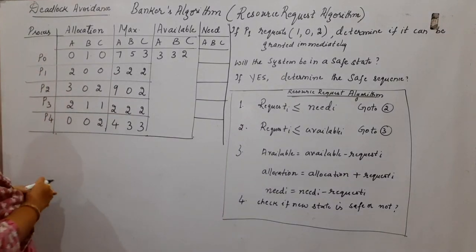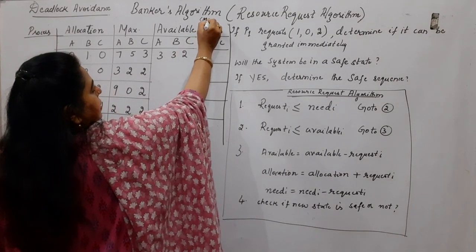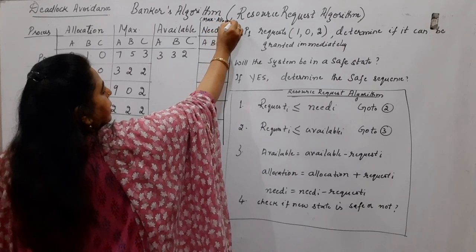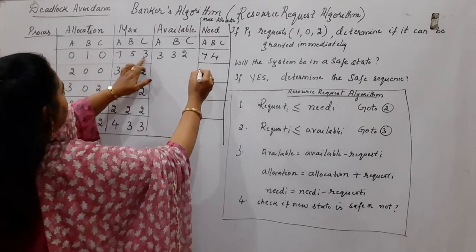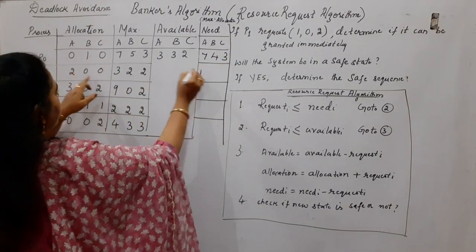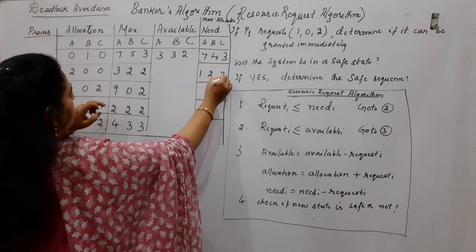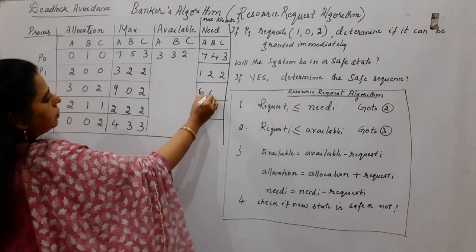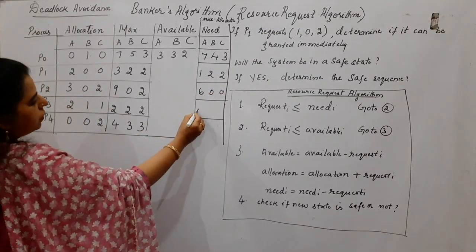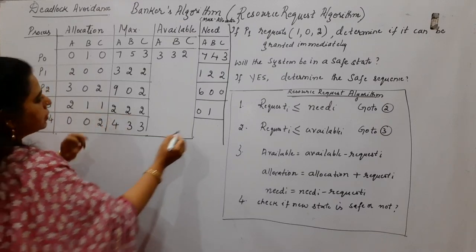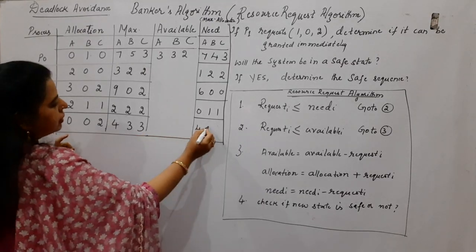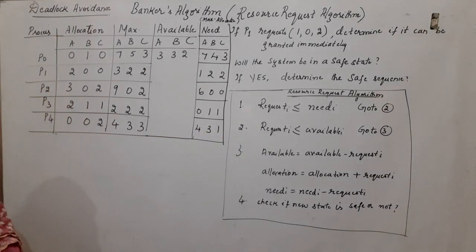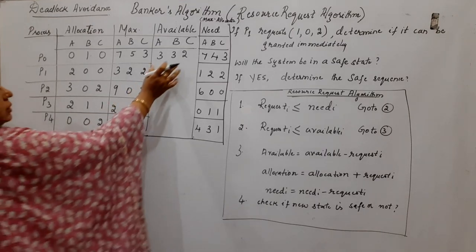Need equals maximum minus allocation. So: 7−0=7, 5−1=4, 3−0=3; next: 3−2=1, 2−0=2, 2−0=2; then: 9−3=6, 0−0=0, 2−2=0; then: 2−2=0, 2−1=1, 2−1=1; and the last process: 4−0=4, 3−0=3, 3−2=1. So the need matrix values are 7,4,3 | 1,2,2 | 6,0,0 | 0,1,1 | 4,3,1. Available is 3,3,2.